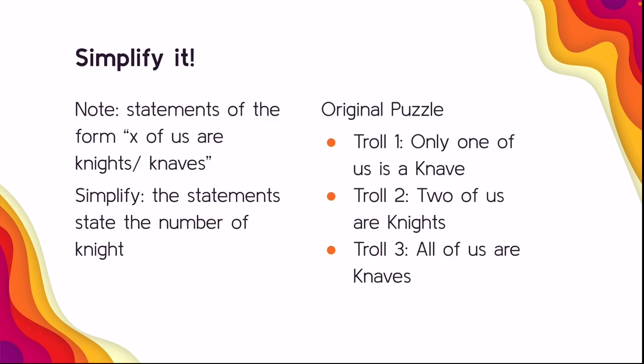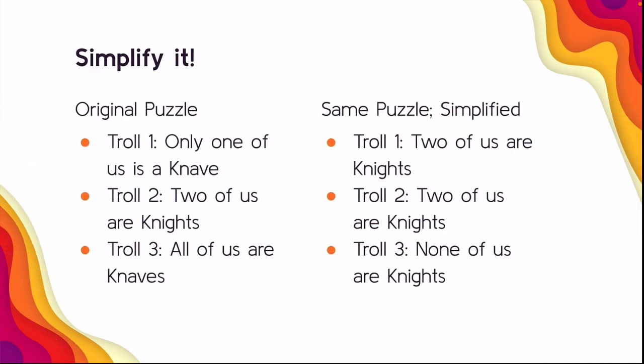You have the original puzzle on the left, and if you swipe you'll see the exact same puzzle but simplified — troll one says 'two of us are knights,' troll two says 'two of us are knights,' and troll three says 'none of us are knights.' In the simplified version it is a lot easier to see that the solution is troll one and troll two are the knights. Solutions are always of the form: if x trolls say x of them are knights, that is a solution.